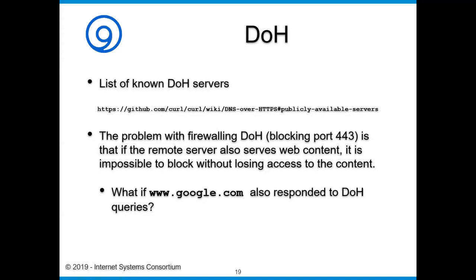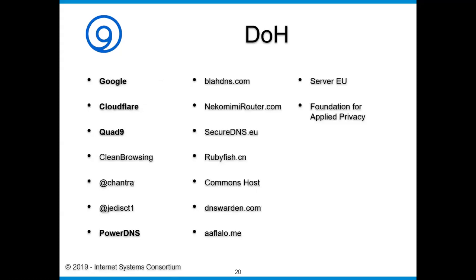Here's a list of players providing DOH services: Google, Cloudflare, Quad9, Clean Browsing, PowerDNS, and a bunch of others. I personally run two DOH and DOT servers out in the cloud. They're not highly visible, but information gets around. If you decide to block them, do you block port 443 or whitelist port 443? That's not going to work very well — it definitely won't scale.